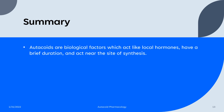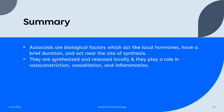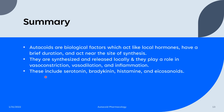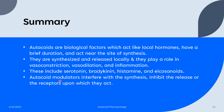In summary, autacoids are biological factors which act like hormones. They have a brief duration of action and act near the site of synthesis. They are synthesized and released locally and play a role in vasoconstriction, vasodilation, and inflammation. Some common autacoids include serotonin, bradykinin, histamine, and eicosanoids. Autacoid modulators interfere with the synthesis, inhibit the release, or block the receptors upon which autacoids act. Common examples of autacoid modulators include paracetamol and aspirin.